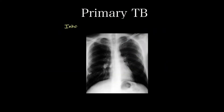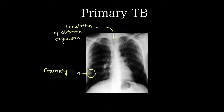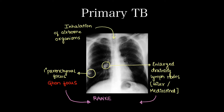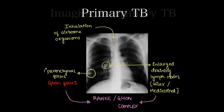Coming to primary tuberculosis, the mode of infection is inhalation of airborne organisms which then infect the lung. The primary parenchymal focus in the lung is called Ghon's focus. There will be enlarged draining lymph nodes associated — ipsilateral hilar or mediastinal nodes. Both of these together are known as the Ranke or Ghon's complex.